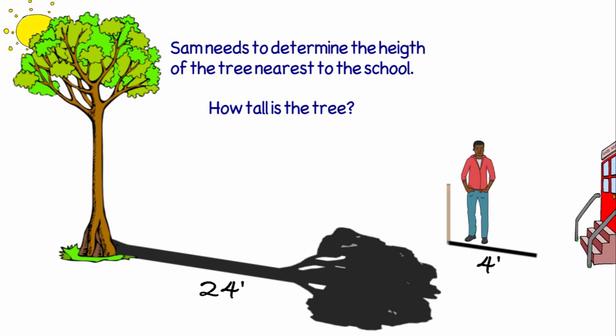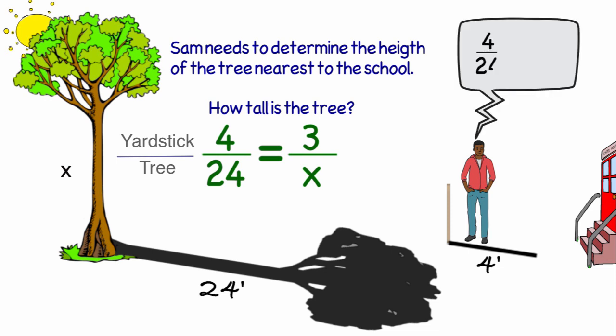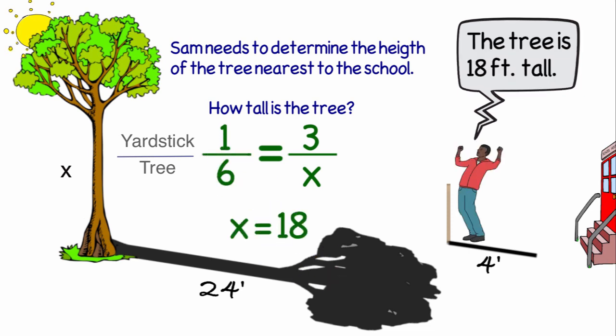Well, I'm going to be looking at the yardstick to the tree. So my shadow for my yardstick was four feet, and the shadow for my tree is 24 feet. That's going to be equal to the height of my yardstick, which of course is three feet, over the height of the tree, which we're trying to find out. Four over 24 is one-sixth. So I'll reduce my fraction and then cross multiply to find the answer, which leaves me with x is equal to 18. So the tree is 18 feet tall.